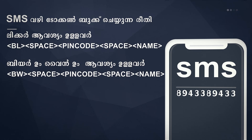The options are beer, wine, pin, and liquor. In this case, liquor is the option — BL pin code name. If we have wine or beer, it is BW pin code name. Type the number: 99433. We have a confirmation message.